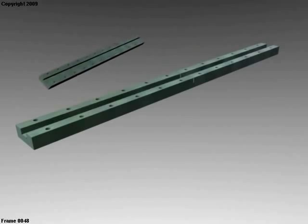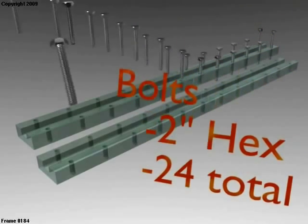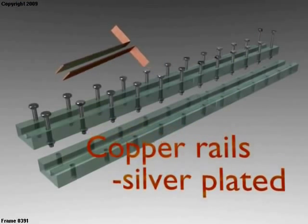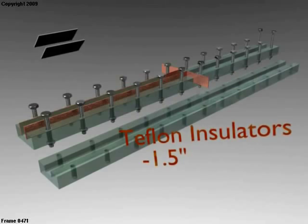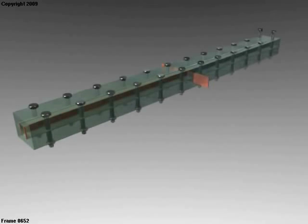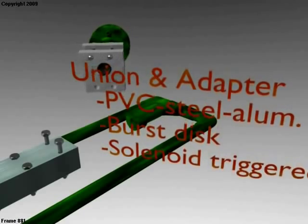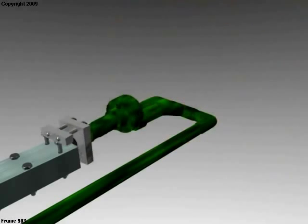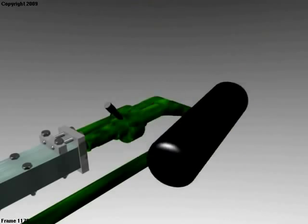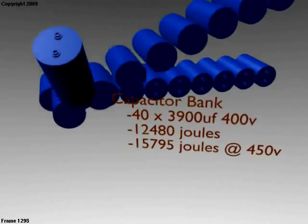Rail guns have a more complicated design. The basic components are: the body, held together with lots of bolts so it doesn't fly apart; the rails that conduct electricity and create the magnetic field; insulators to stop the rails from shorting out on the body; and teflon rails acting as insulators and low-friction surfaces. A gas injector and adapter with a solenoid trigger uses a compressed gas tank at about 500 psi to kick-start the projectile before it is accelerated by the magnetic fields. Then there are the capacitors, which deliver a high-amperage current to create a strong magnetic field around the bars.